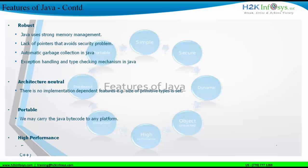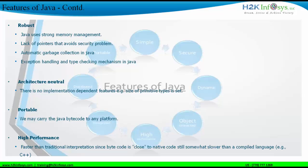Java is a portable language because of the bytecode concept. The bytecode can be ported from one platform to another. If you create source code in Windows, the compiler in the JVM converts it to bytecode, and that bytecode can be taken to any other platform to run the same Java program. The only requirement is that the target platform must have the JVM installed. Java is also a high-performance language compared to other traditional interpreted languages, though it is slower than C++ because C++ uses source code directly while Java uses bytecode.